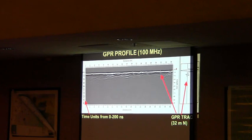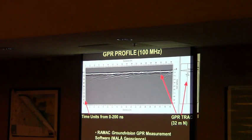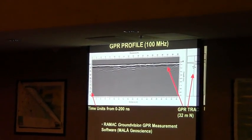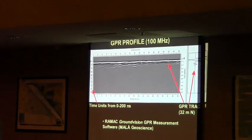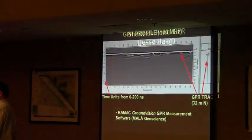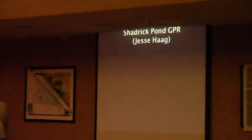The initial file stores the data in time units — nanoseconds — coming back really fast. Then you can convert the time units to depth if you know the velocity at which the wave moves through the material.